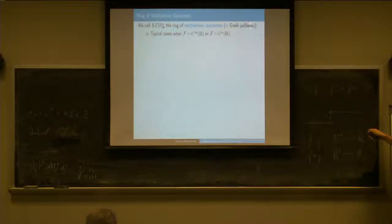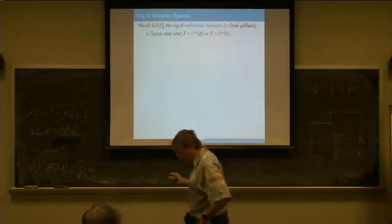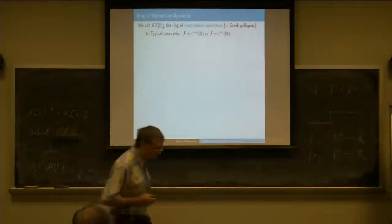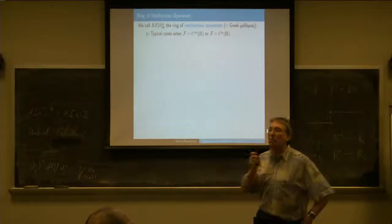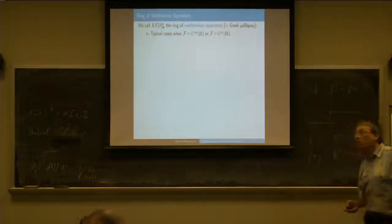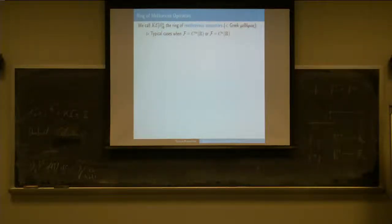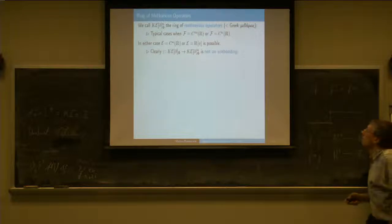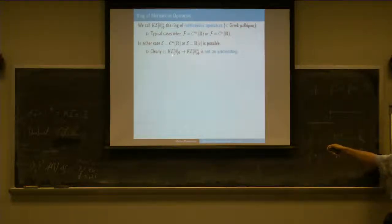Methorius is just from Greek—methorius means having a boundary. I originally called this a ring of hyperfunctions in a talk, but somebody in the audience complained heavily that the word hyperfunction must not be used because it already has a meaning. So by inventing a new word—methorius operators. Typically I think of F as C-infinity or meromorphic functions, and the extension will not be injective.